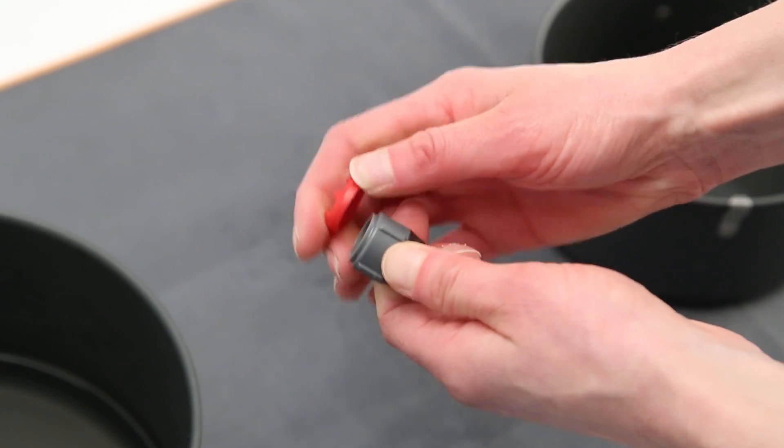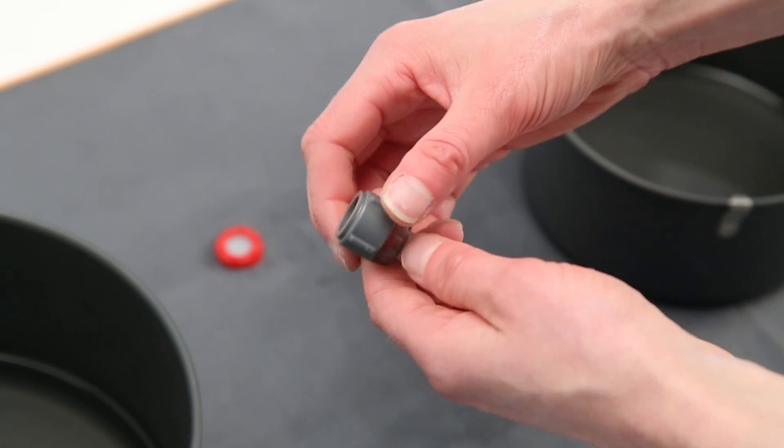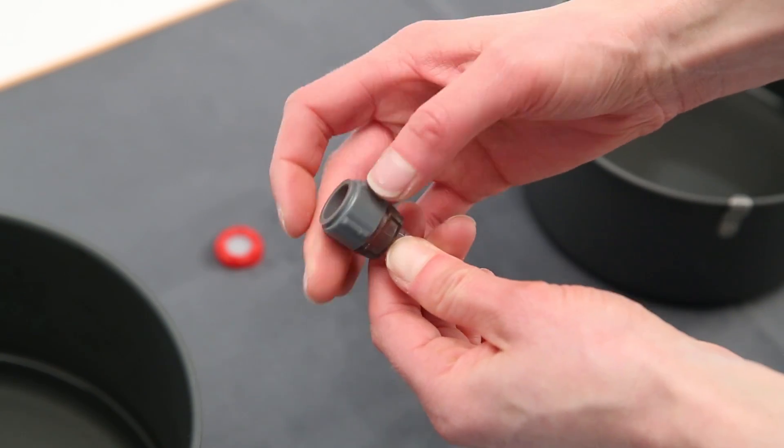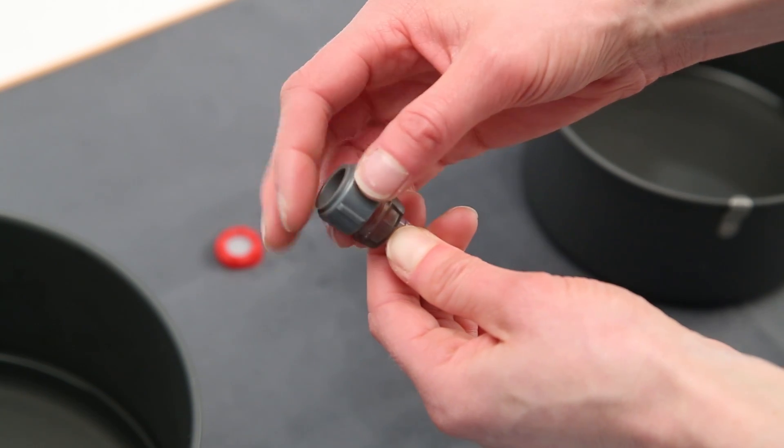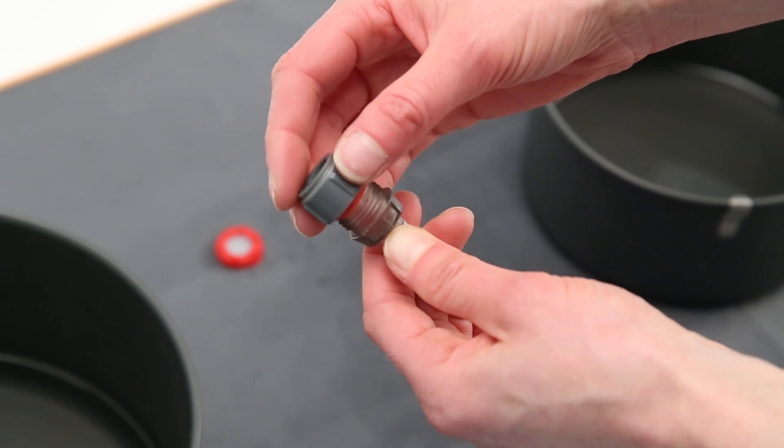Unsnap the pre-filter from the female check valve housing and put it in a safe spot. Unscrew the female check valve housing from the male check valve housing.